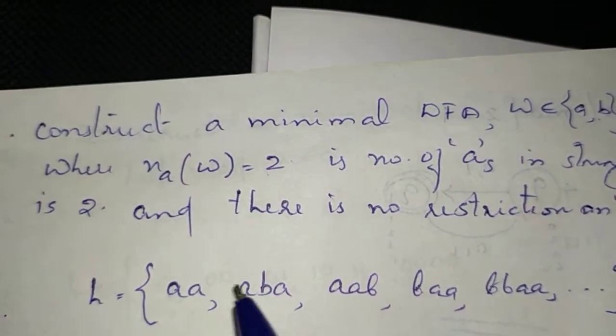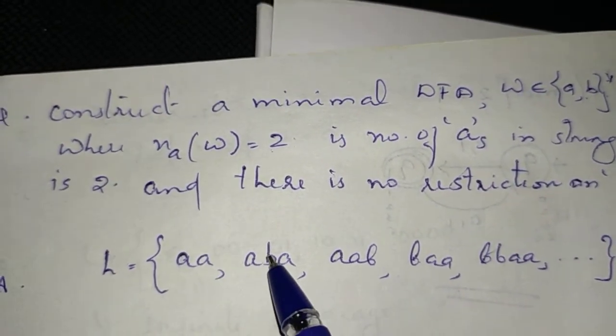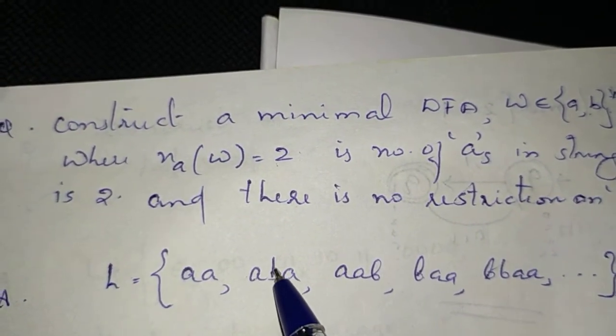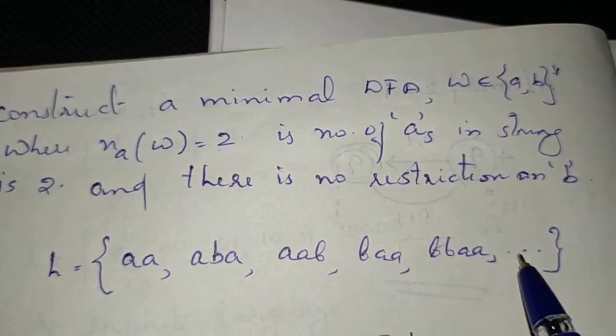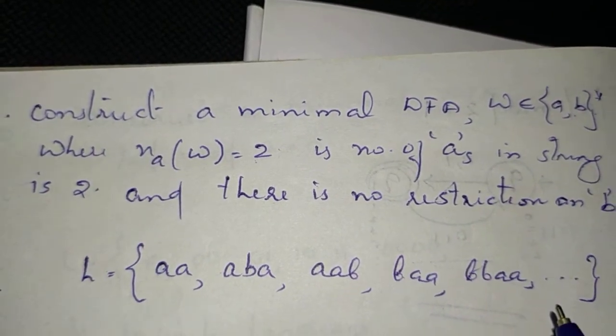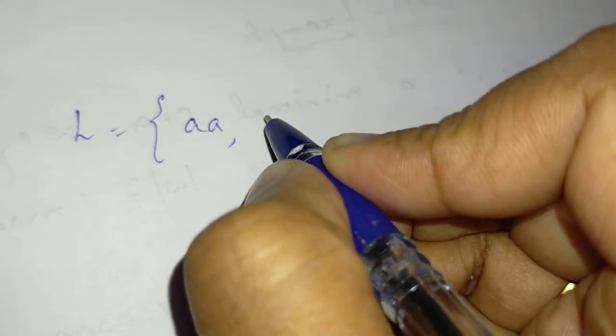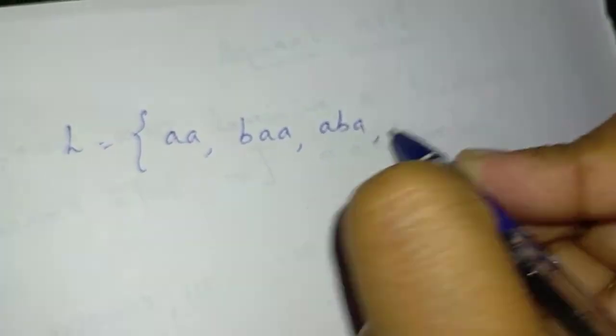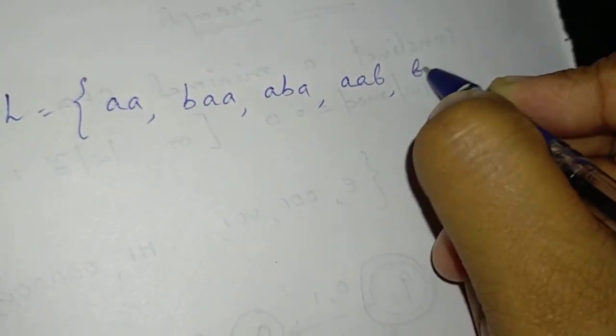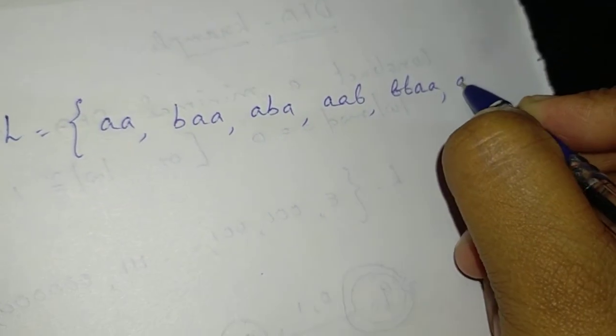For example, strings like a, a, b — that has one a. Then b is also part of the string. This is an infinite language because b can appear any number of times. Then the corresponding DFA concept: the number of a's must be exactly 2, with b having no restriction, and so it is an infinite language.